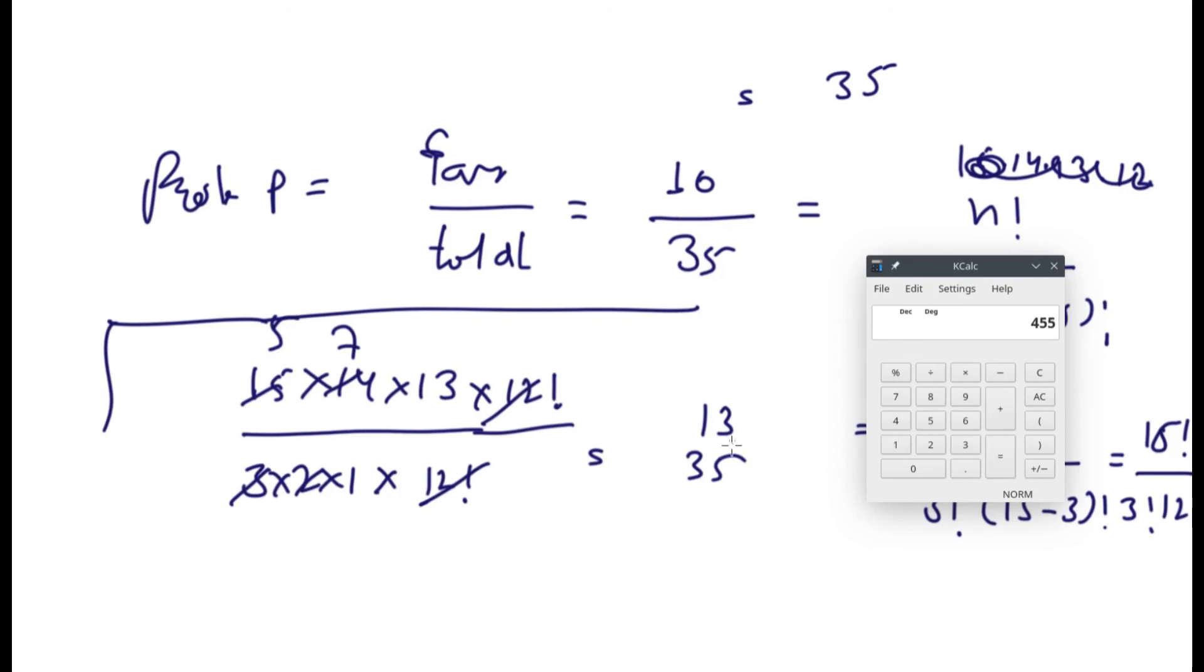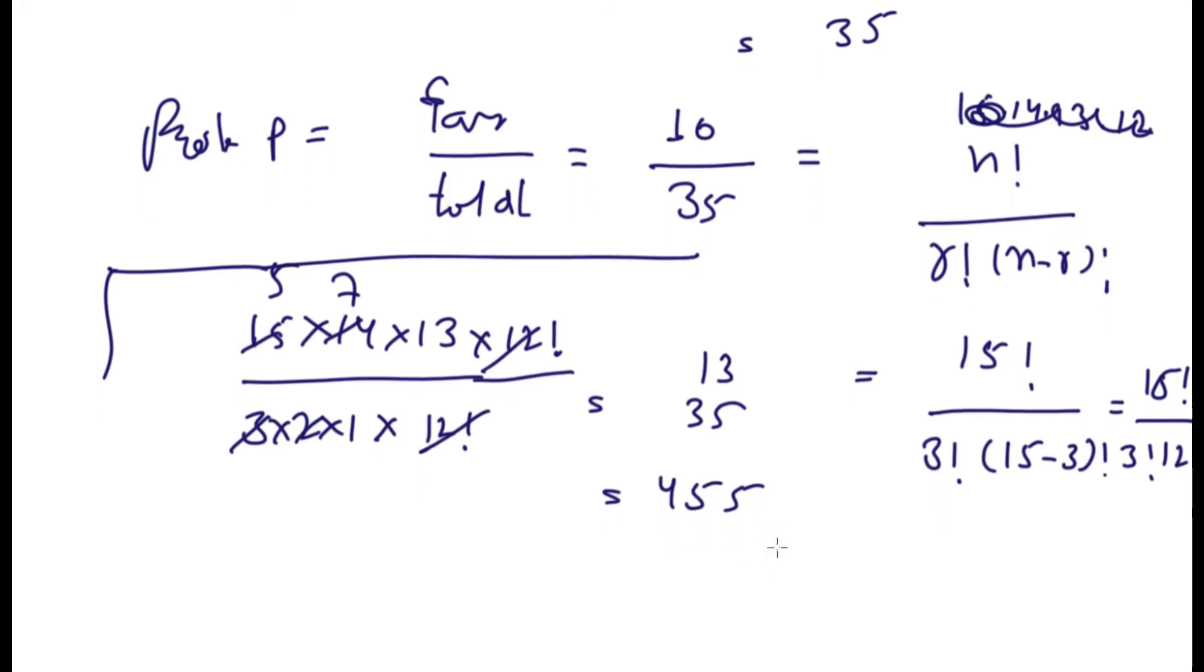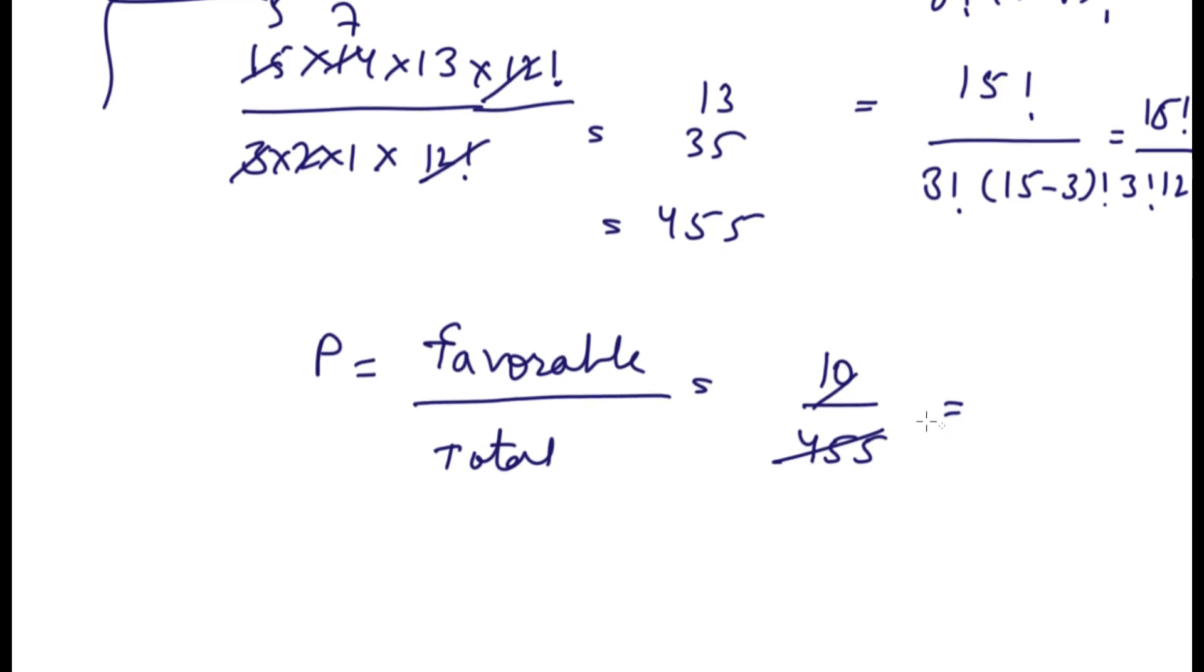So our probability P will be favorable divided by total. Now the cases will be 10 divided by 455. We've already seen the options. The option now is very simple. Let's cut it by 5, so it will become 2/91. Let's check the option again.